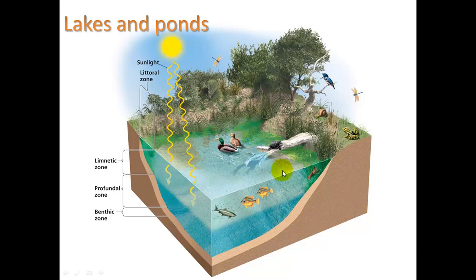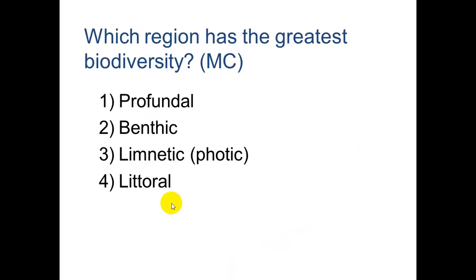Vertically, we have the limnetic zone at the top, where light can penetrate, allowing photosynthesis by plants and algae, which creates high dissolved oxygen that fish like. Underneath that is the profundal zone, where not much happens because light doesn't reach. In the benthic zone there isn't much light, but there is a lot of dead matter from organisms that have died and sunk to the bottom — algae, plants, and animals — so you have a lot of decomposers there, a lot of activity, and a lot of nutrients.